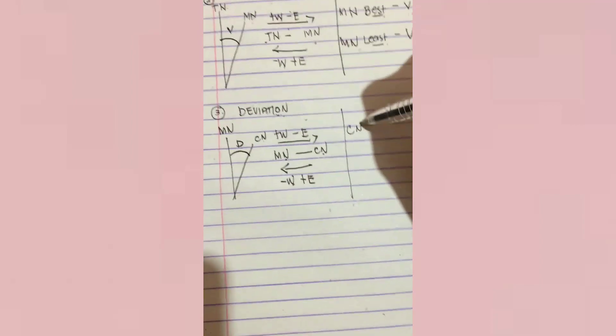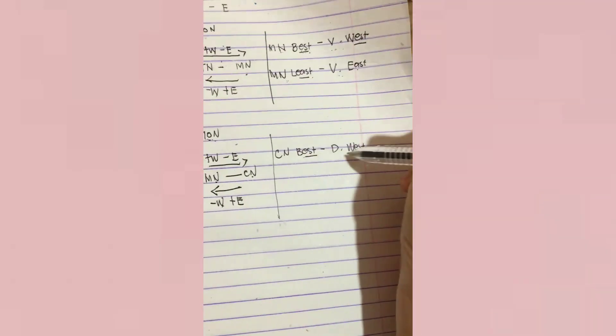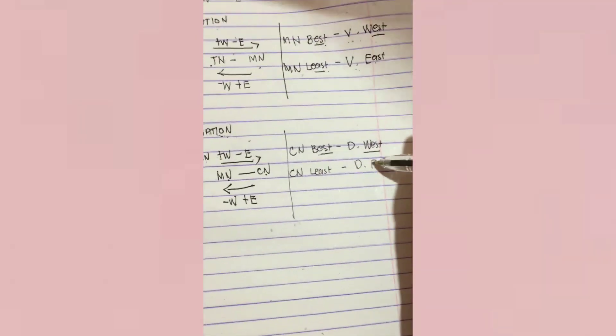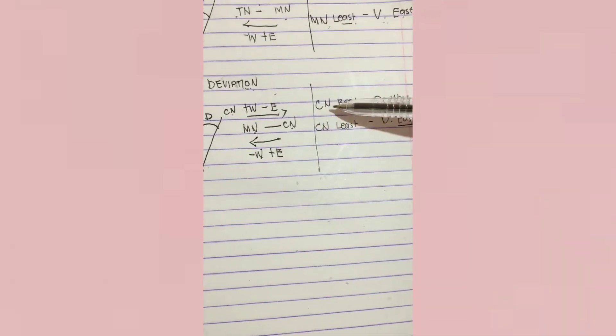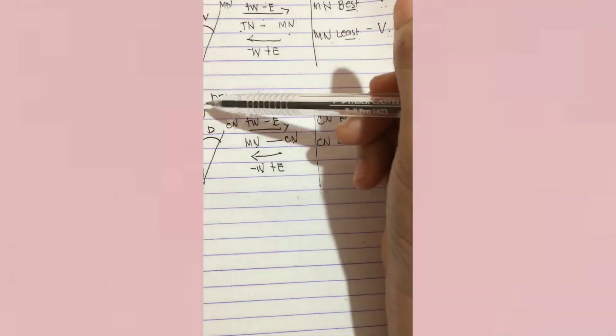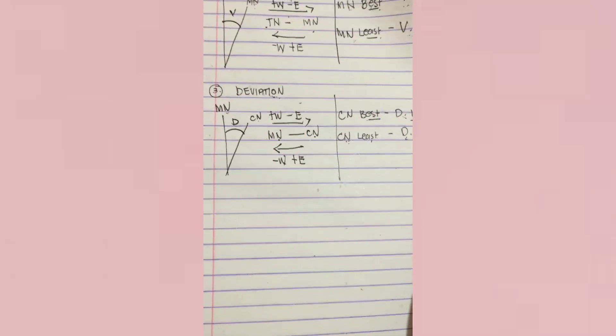The second rule in calculating deviation: deviation is west when compass north is best, and deviation is east when compass north is least. This means if our compass north has a greater value compared to magnetic north, our deviation is west. If the value of our compass north is lesser than the value of our magnetic north, the direction of our deviation is east.